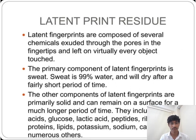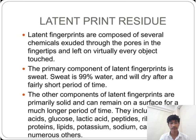Latent fingerprints are composed of several chemical residues secreted through the pores in the fingertips and left on virtually every object touched. The primary component of latent fingerprints is sweat. Sweat is 99% water and will dry after a fairly short period of time. The other components of latent fingerprints are primarily solid and can remain on the surface over a much longer period of time.